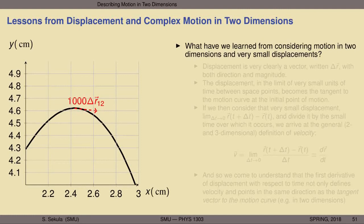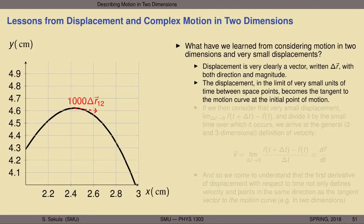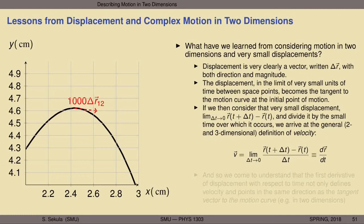So what have we learned from considering motion in two dimensions and very small displacements? We've learned that displacement is clearly itself a vector, written as delta r vector, with both direction and magnitude. This displacement, in the limit of very small units of time between the space points, becomes the tangent to the motion curve at the initial point of motion.